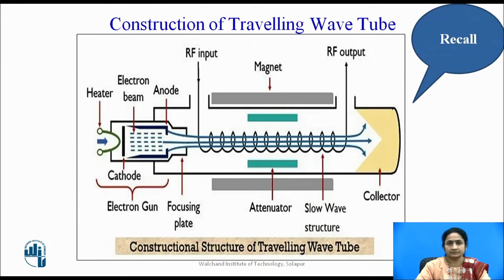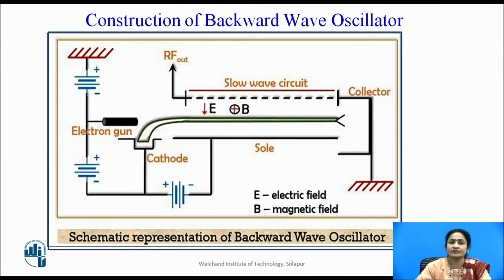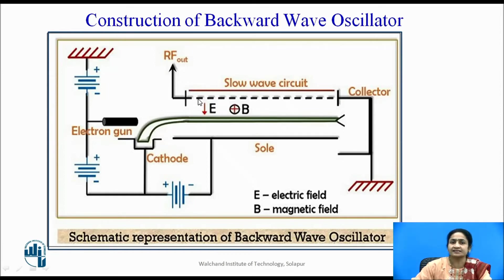Let us recall the construction of the TWT, which we had seen in the previous videos. It consists of a slow wave structure in which velocity modulation takes place. This is a linear device — the beam flows from the cathode in one forward direction. In the backward wave oscillator, the wave travels in the opposite direction. The electron beam travels in one direction, while the oscillated waves come back and are collected at the RF output. The collector reflects the signals, and a slow wave structure is internally built into the tube.